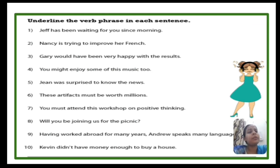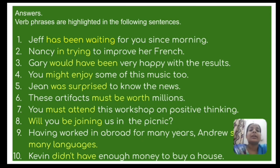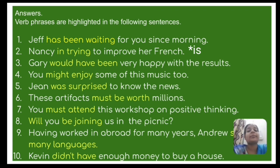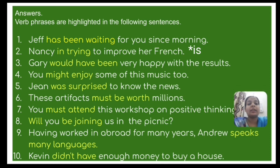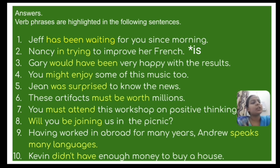You already know what a verb phrase is — let's check how many answers are correct. The highlighted verb phrases are: 'has been waiting,' 'is trying,' 'would have been,' 'might enjoy,' 'was surprised,' 'must be worth,' 'must attend,' 'will be joining,' 'speaks' — and the last one, 'didn't have.' I hope students you have understood very well.